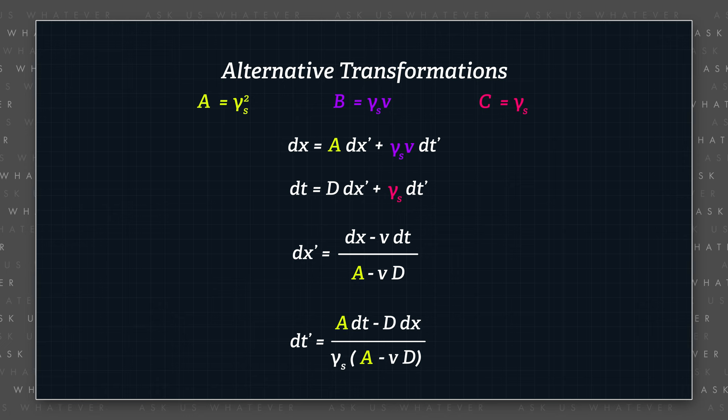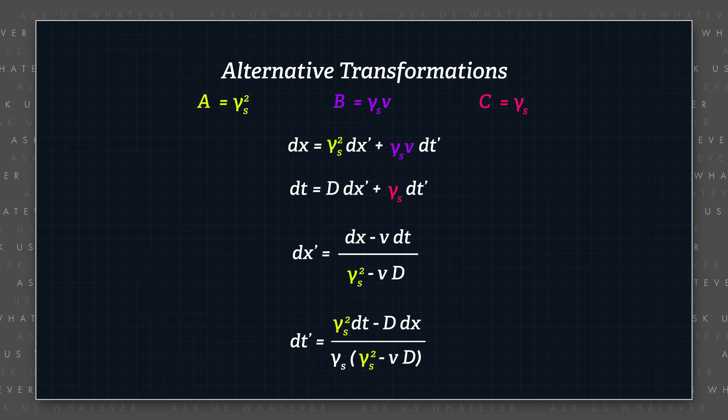And therefore, let's update our transformations by substituting gamma s squared for A. We now only need to find capital D, and we're finished.